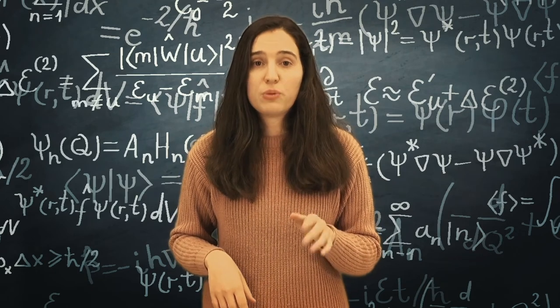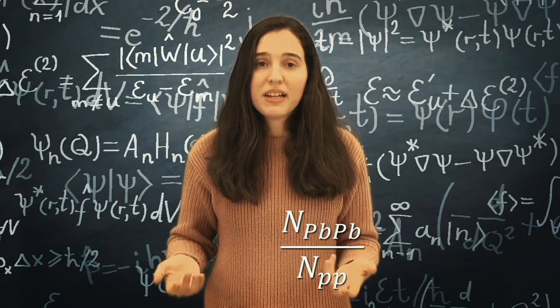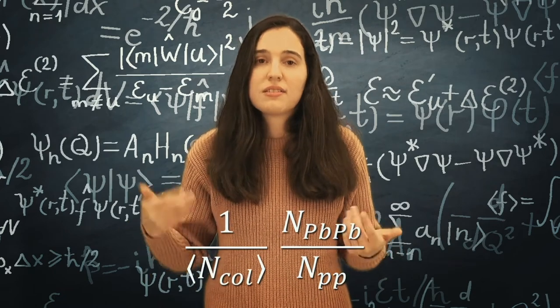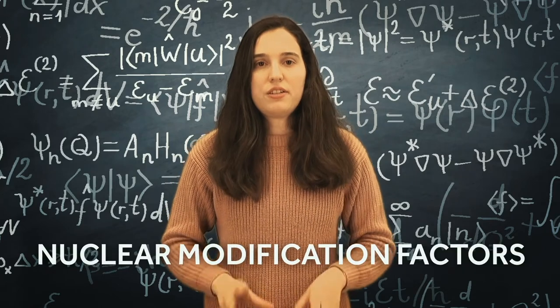Then we compute ratios between lead-lead and proton-proton production, scaled by the expected number of binary collisions in the lead-lead case. These are called nuclear modification factors.